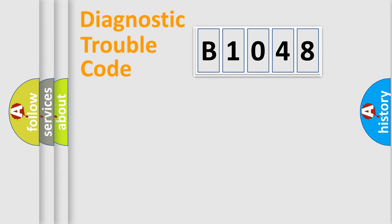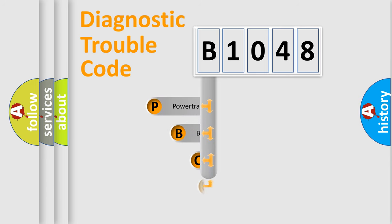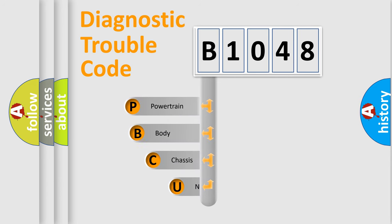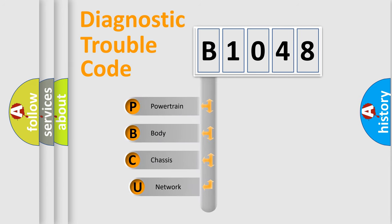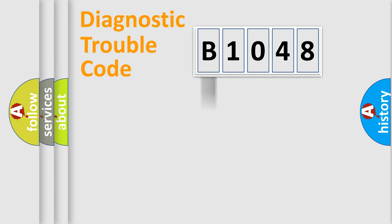Let's do this. First, let's look at the history of diagnostic fault code composition according to the OBD2 protocol, which is unified for all automakers since 2000. We divide the electric system of an automobile into four basic units: Powertrain, Body, Chassis, and Network.